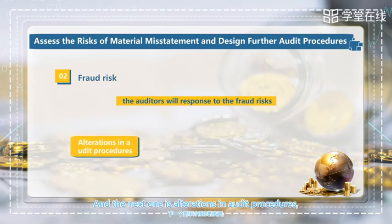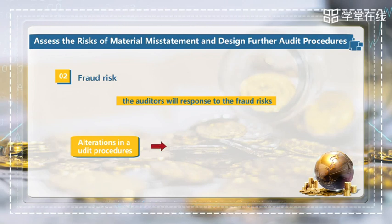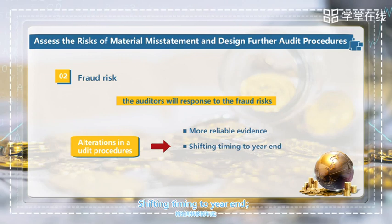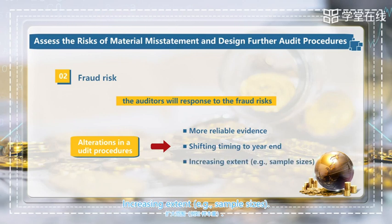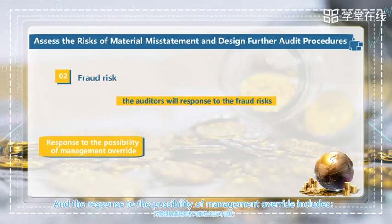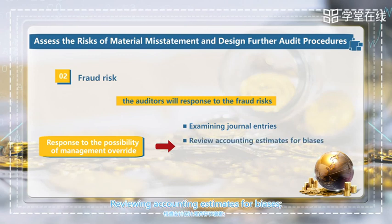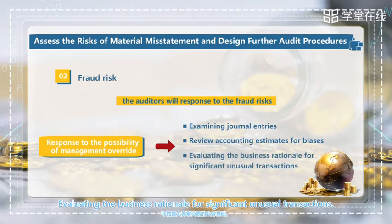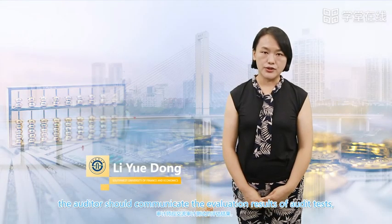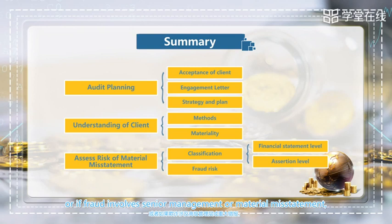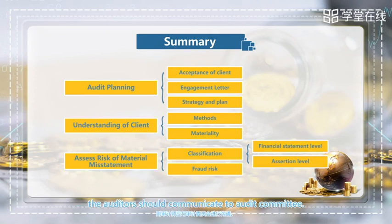Alterations in audit procedures allow auditors to obtain more reliable evidence, including shifting timing to year-end and increasing the extent of the audit. The response to the possibility of management override includes examining journal entries, reviewing accounting estimates for biases, and evaluating the business rationale for significant unusual transactions. After that, the auditor should communicate the evaluation results of audit tests and any discovery of fraud to the appropriate level of management. If fraud involves senior management or a material misstatement, the auditor should communicate to the audit committee.